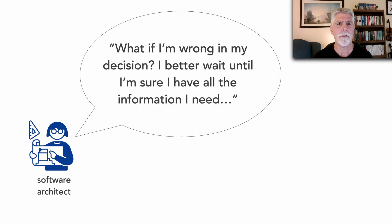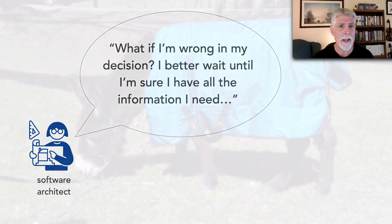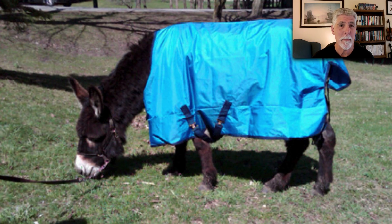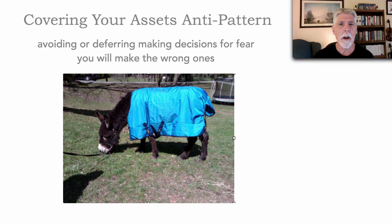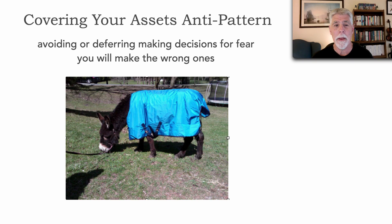These are great examples of what we call analysis paralysis, which is an anti-pattern. However, all of these statements and this action of deferring decisions also describes another anti-pattern called the covering your assets anti-pattern. This architectural anti-pattern occurs when you avoid or defer making decisions because you're afraid you'll make the wrong ones.